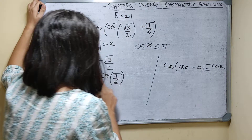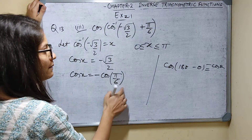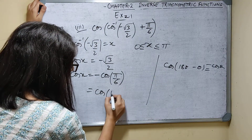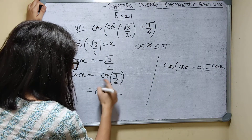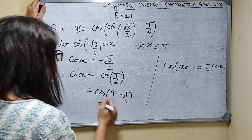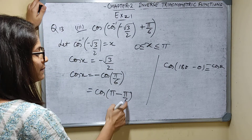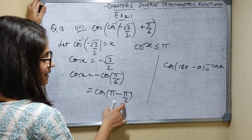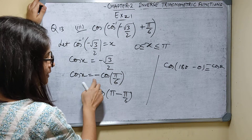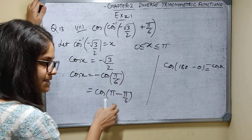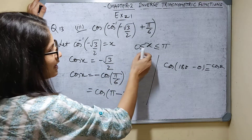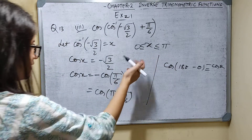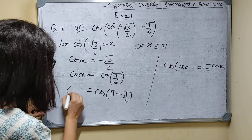Now substituting: cos of (cos inverse(minus root 3 by 2) plus pi by 6) = cos of (5 pi by 6 plus pi by 6) = cos of (6 pi by 6) = cos of pi. And cos pi equals minus 1. So the answer is minus 1.